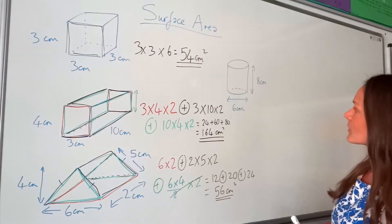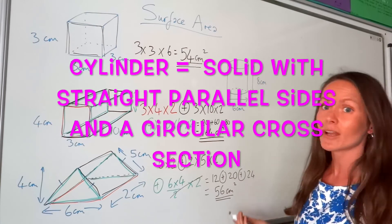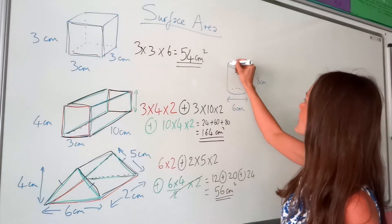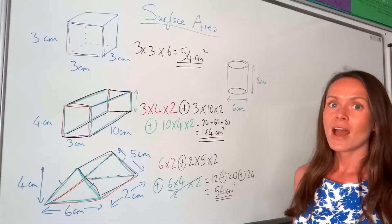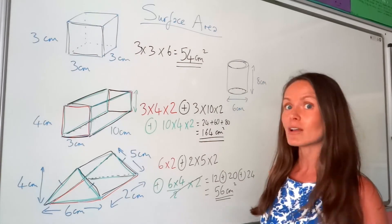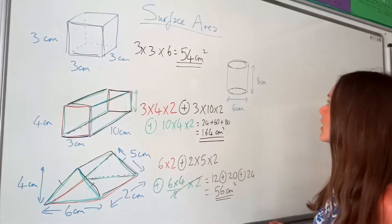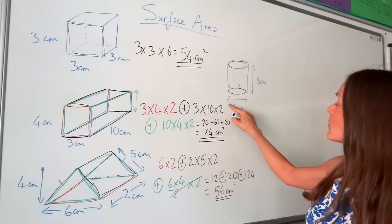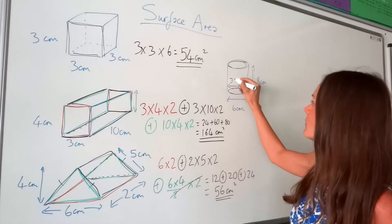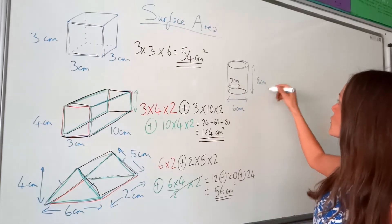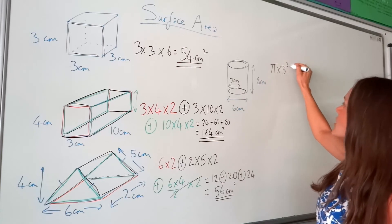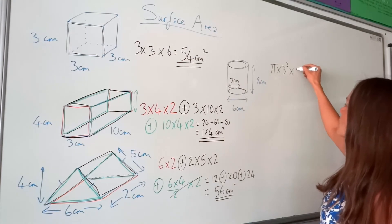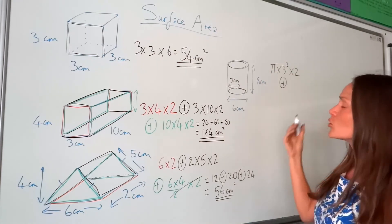On to the final one — this is a cylinder. We've got to work out the area of all the surfaces again. I can see two surfaces quite easily: two circles. Remember, the area of a circle is π r squared, so you multiply pi by the radius squared. The radius of this circle is half of the diameter, so it's 3 if the diameter is 6. So you've got π times 3 squared. That's the area of one of the circles. Remember there are two, so you need to multiply that answer by 2.